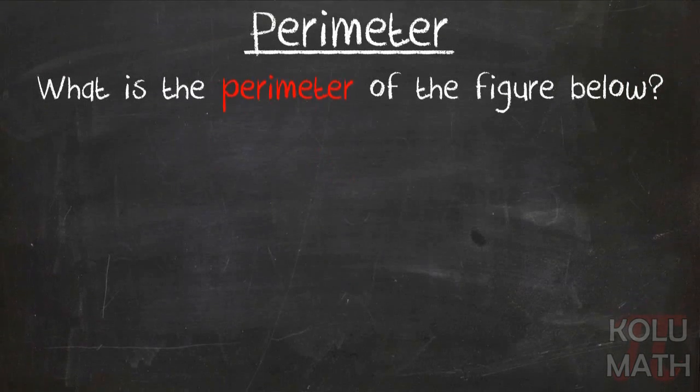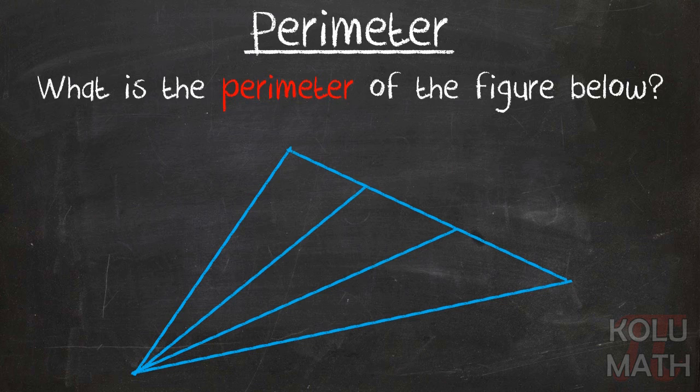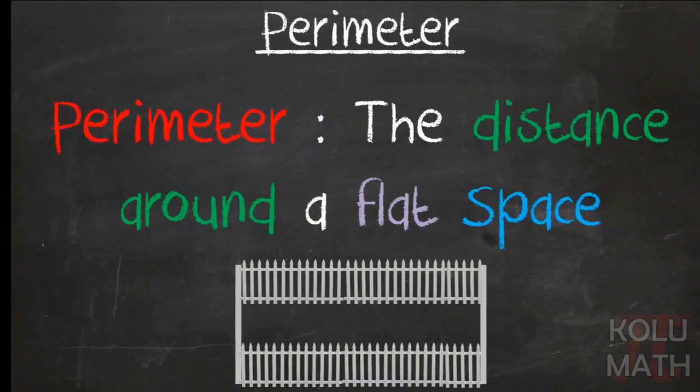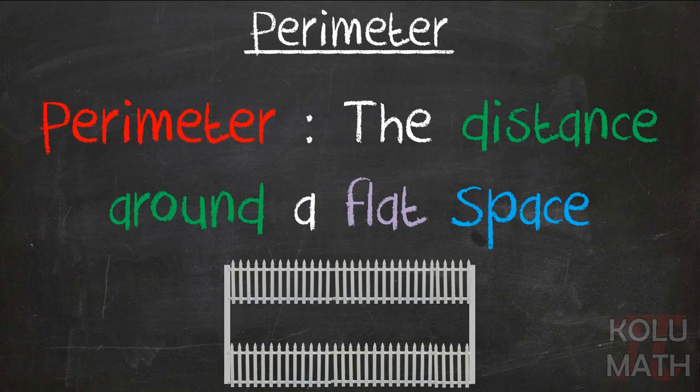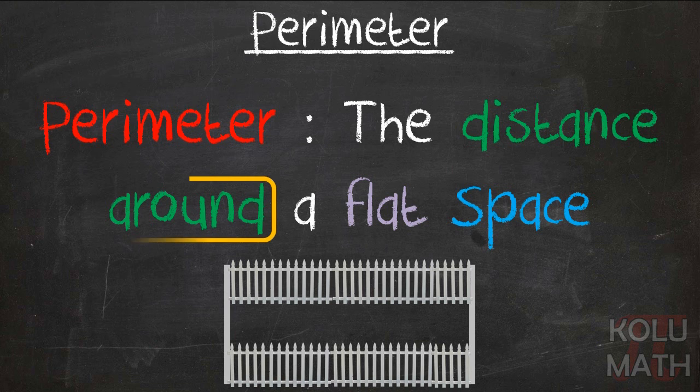Let's take a look at another example. What is the perimeter of the figure below? Well, this one looks a little different. There's the information they've given us. I don't know. There's a lot of numbers to add there. We probably could just add them all. But wait, we should probably take a look back at the definition. The distance around a flat space, a fence. Think about where you'd want to build a fence to keep people out. You don't want to have a fence inside of your shape.